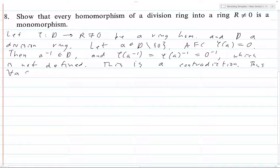Thus, for all A in D set minus 0, for all nonzero elements in D, phi of A is not equal to 0. So then kernel of phi can only be 0.